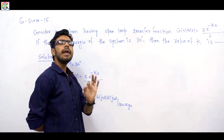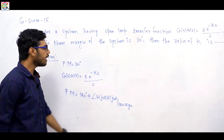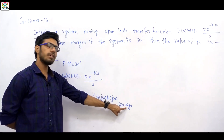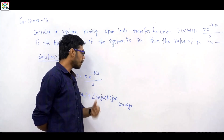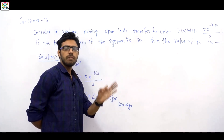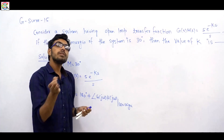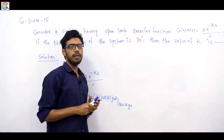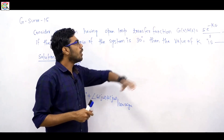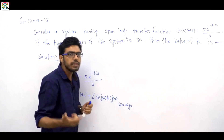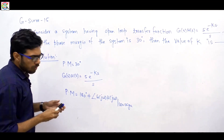Where ω_gc is nothing but the gain crossover frequency. To find the phase margin of any given system, first we need to find the gain crossover frequency. The gain crossover frequency is that frequency where the magnitude of the open loop transfer function is equal to 1.